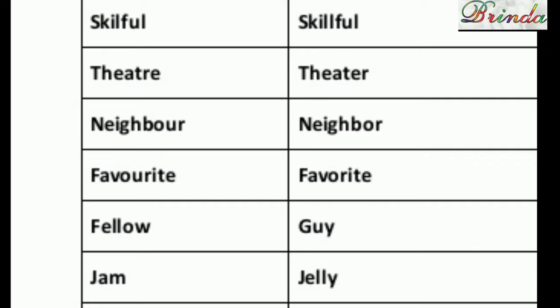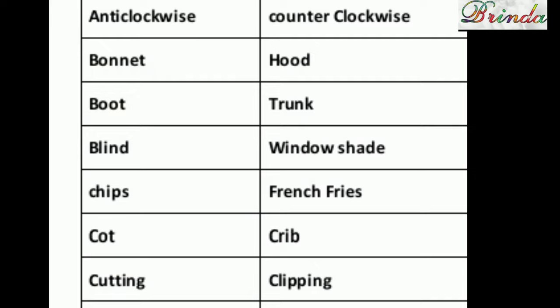Favourite — F-A-V-O-U-R-I-T-E is British English; favorite — F-A-V-O-R-I-T-E is American English, without the U. Next one: fellow versus guy — fellow is British, guy is American; same meaning. Jam versus jelly. Anti-clockwise is British English; counter-clockwise is American English.